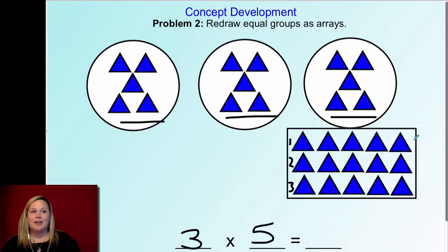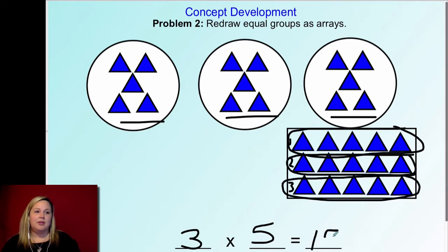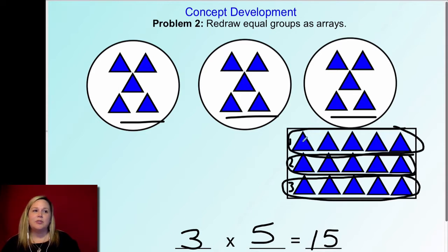For this one, I could skip count by fives: five, ten, fifteen. If that's good for you, rock on. If you need to count each one — one, two, three, four, five, six, seven, eight, nine, ten, eleven, twelve, thirteen, fourteen, fifteen — that's absolutely fine too. Good job with that one friends.